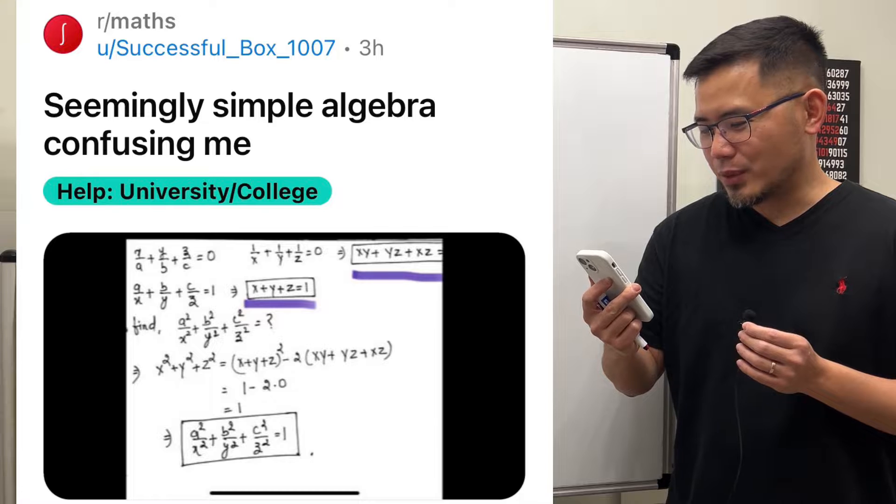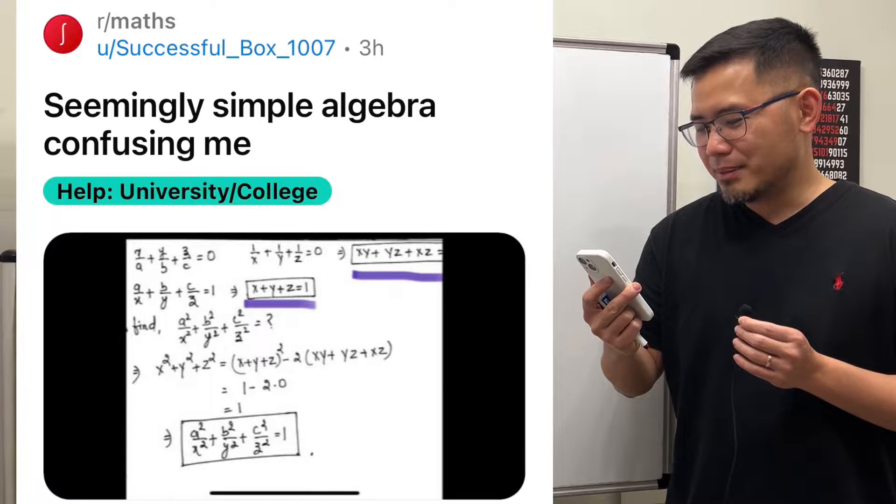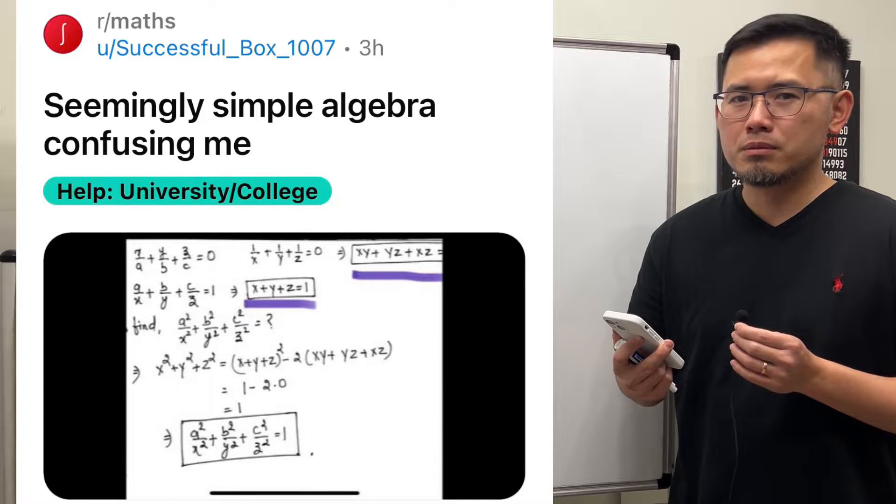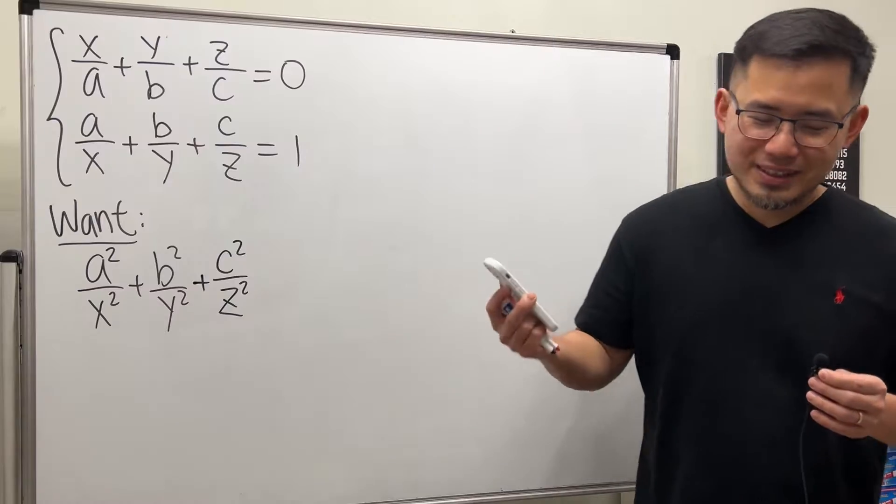So I was like, how did they get 1 over x plus 1 over y plus 1 over z equals 0? But anyway, let's go over this.